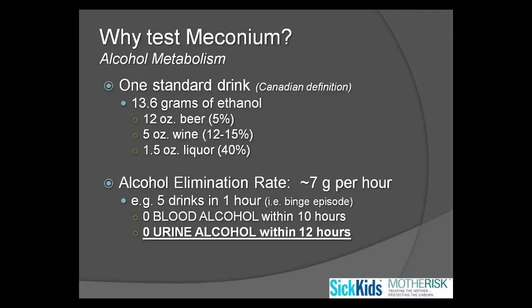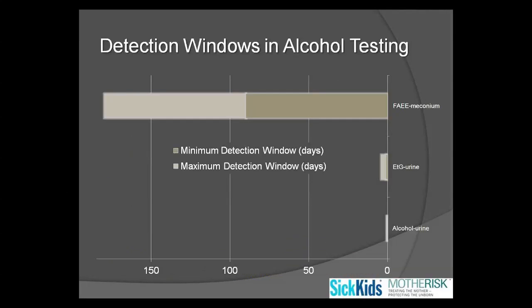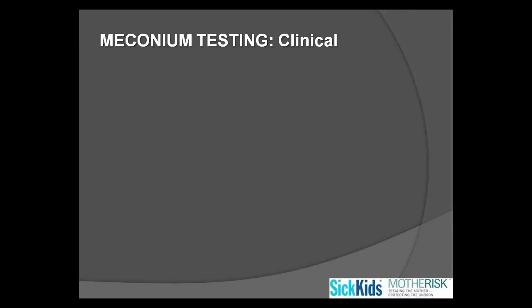We know there are issues with sensitivity of maternal self-report due to the stigma of disclosing problematic alcohol use in pregnancy, but there are also limitations with conventional laboratory methods. Routinely available urine testing for ethanol — if it's negative — is providing no valuable information. This graph shows a visual representation of what's available through urine analysis versus meconium in terms of detection window. Meconium represents approximately a 3 to 6 month timeframe preceding birth, which far exceeds what's available by any other conventional matrix for analysis, and this also holds true for drugs of abuse.